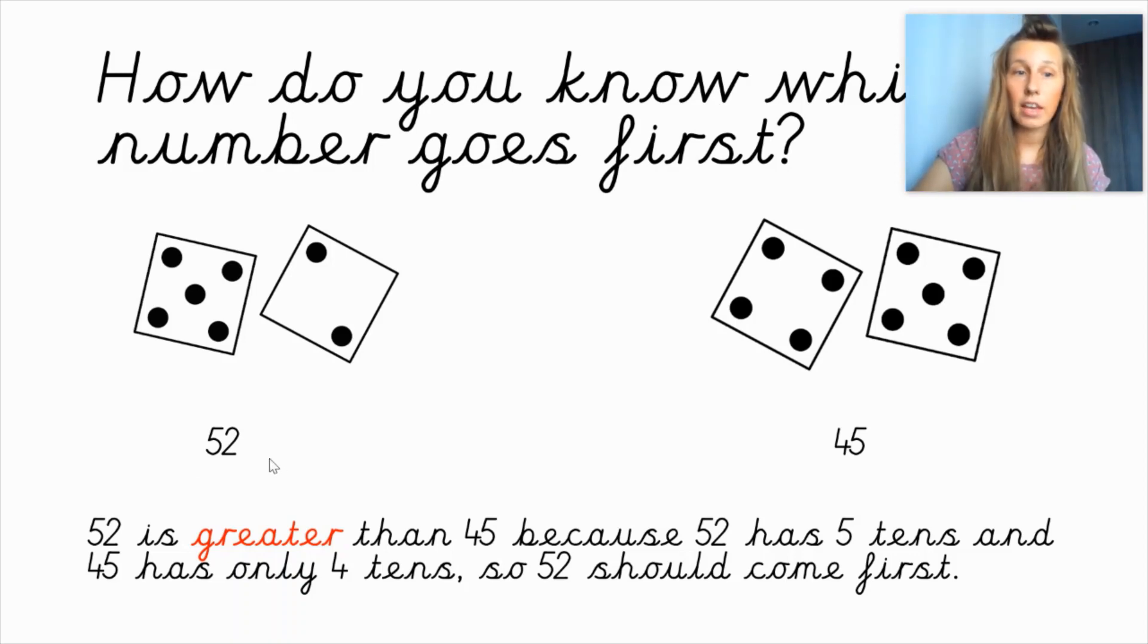So, I think fifty-two is greater than forty-five. And this is not the end of my sentence. I need to explain why. Fifty-two is greater than forty-five because fifty-two has five tens and forty-five has only four tens. So, fifty-two has got more tens than forty-six and forty-five. So, fifty-two should come first.